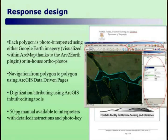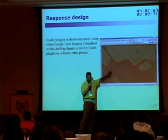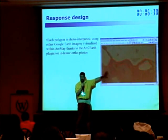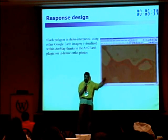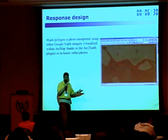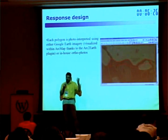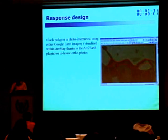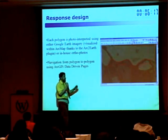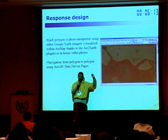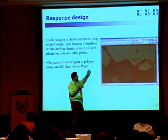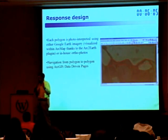For response design, we use a plugin in our GIS called Arc2Earth — some of you may be aware of it. This plugin allows you to display Google Earth imagery or Google Maps inside the ArcMap window, so you can digitize directly in ArcMap with Google Earth imagery as a backdrop. When Google Earth imagery is too coarse, we also have ortho photos we can pull from an in-house catalog. A nice feature is navigating from one polygon to the next using a single button click via the data-driven pages tool, which saves a lot of time.